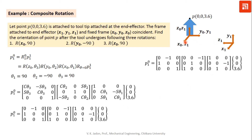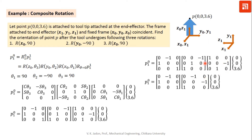We can visualize this as well. When we rotate frame x1 y1 z1 by 90 degrees about x0, y1 comes here and z1 goes up. We can verify: x1 maps with x0 (component is 1), component of x1 along y0 is 0, z0 is also 0. Component of y1 is 1 along z0 and component of z1 is along minus y0. Multiplying the first two matrices gives the orientation of the moving frame after the second rotation.